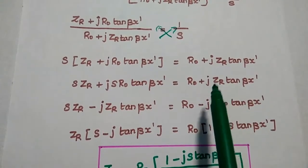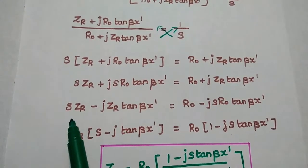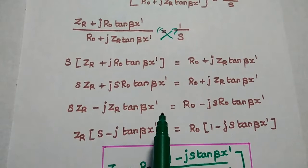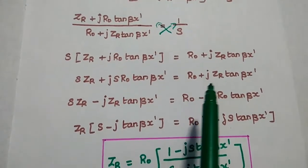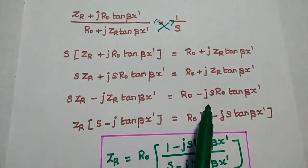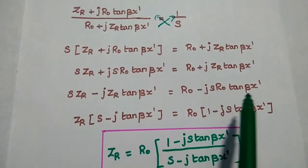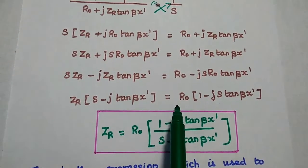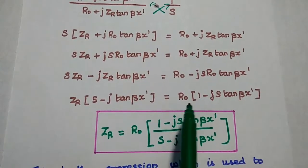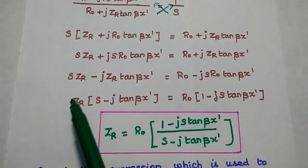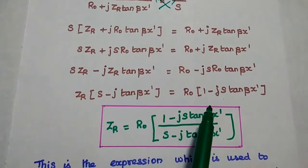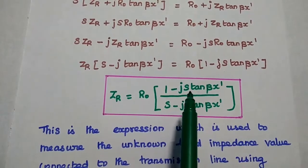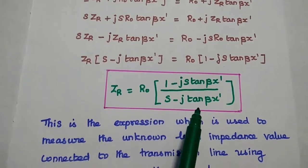Next, we move all ZR terms to one side. S·ZR minus j·ZR·tan(β·x-dash) equals R0 minus j·S·R0·tan(β·x-dash). Taking ZR as a common factor on the left side: ZR·(S minus j·tan(β·x-dash)) equals R0·(1 minus j·S·tan(β·x-dash)). Moving the bracket term to the denominator, we finally get ZR equal to R0 times (1 minus j·S·tan(β·x-dash)) divided by (S minus j·tan(β·x-dash)).